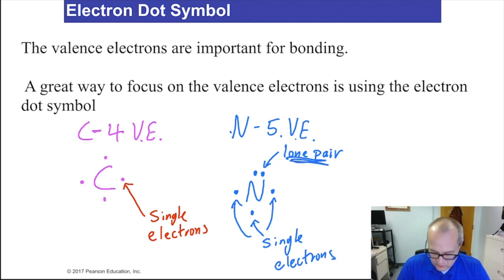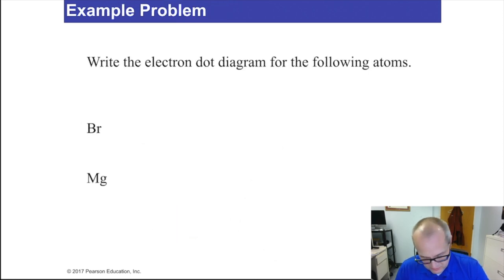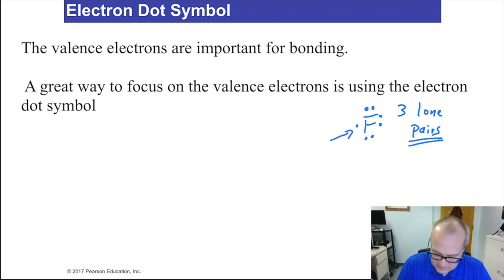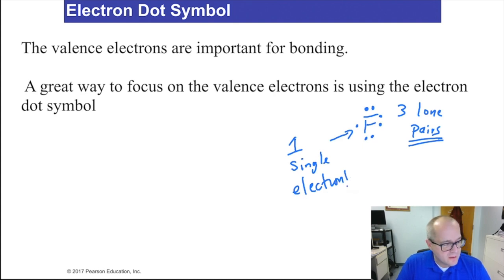Let's do fluorine. Fluorine has 7 valence electrons. You draw F with electrons north, south, east, west, then continue pairing: 5, 6, 7. Fluorine has three lone pairs and one single electron. Those are electron dot symbols. If that wasn't clear, just rewind the video and watch it again — it's a pretty simple topic.